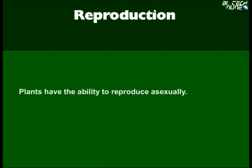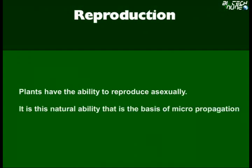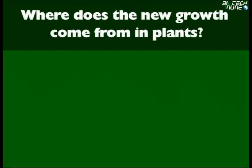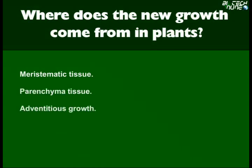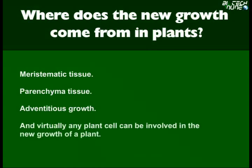Plants have the ability to reproduce asexually, and it is this natural ability that is the basis of micropropagation. Where does new growth come from in plants? It comes from meristematic tissue, parenchyma tissue, adventitious growth, and virtually any plant cell can be involved in the new growth of a plant.